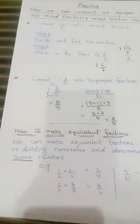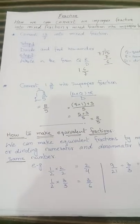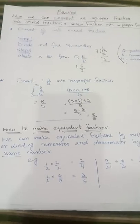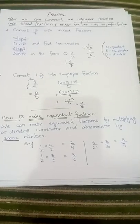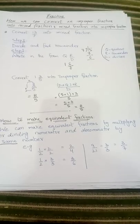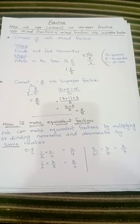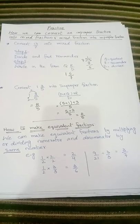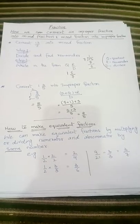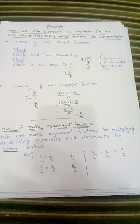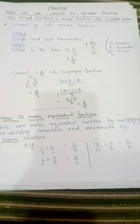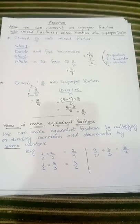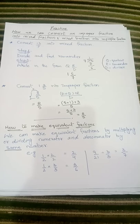Hopefully these two things are clear — how we can convert an improper fraction into a mixed fraction and a mixed fraction into an improper fraction. The next thing we are going to discuss is how to make equivalent fractions. Fractions which represent the same portion of a whole are called equivalent fractions. We can make equivalent fractions by multiplying or dividing the numerator and denominator by the same number.